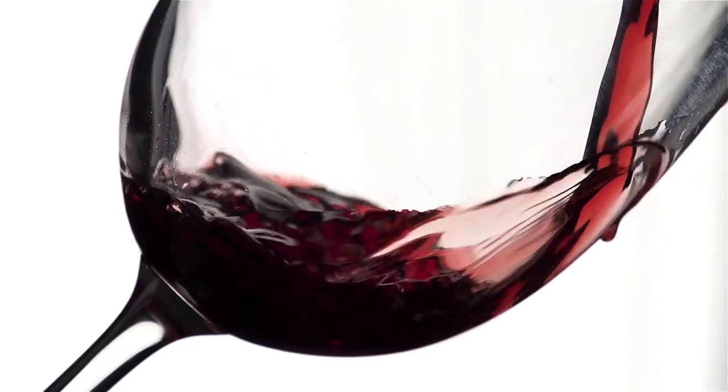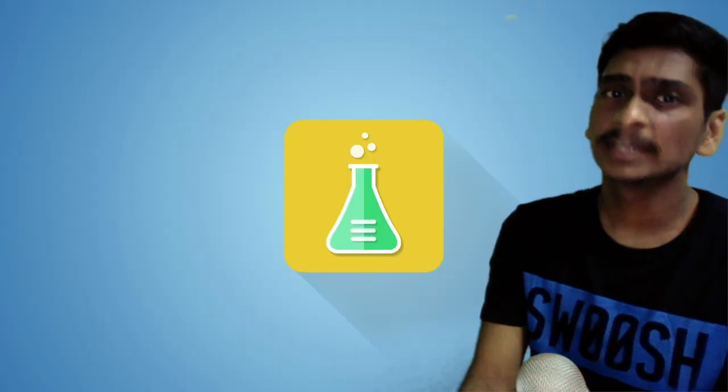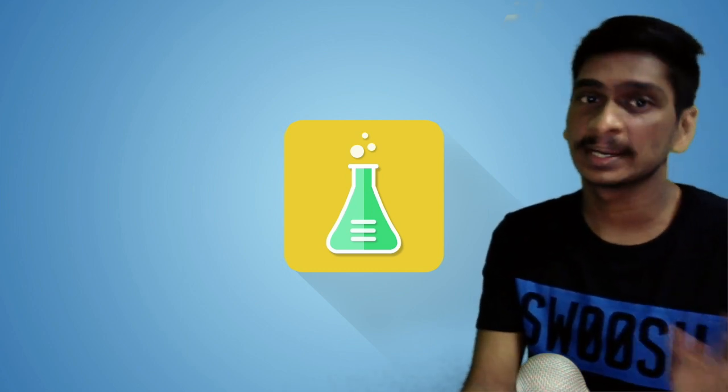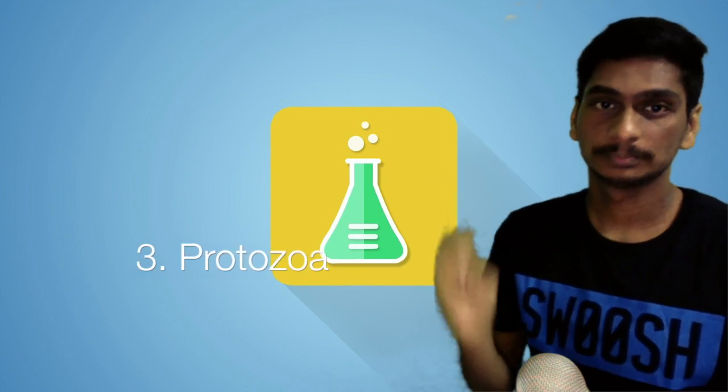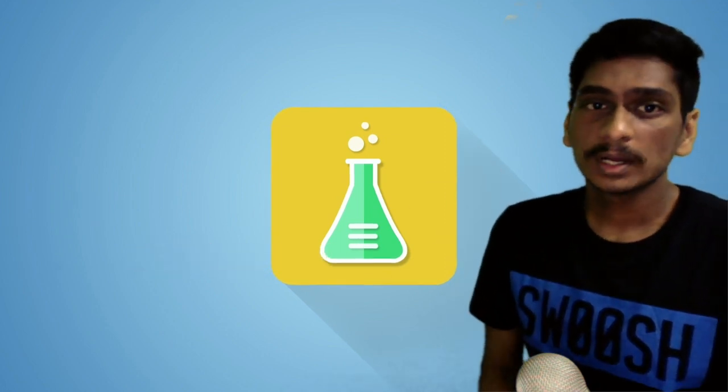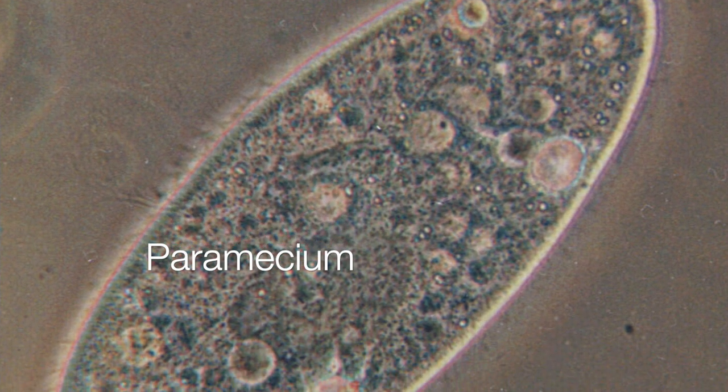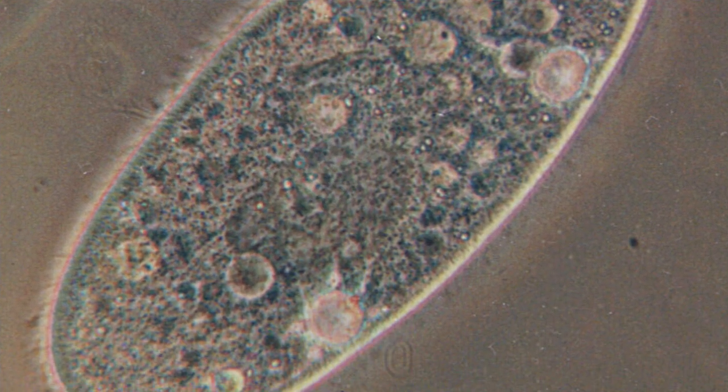Yeast is also used in the production of alcohol and wine. It is grown on natural sugars present on grains like wheat, rice, and the like. Protozoa are also single-celled organisms which prey on bacteria and other food sources.